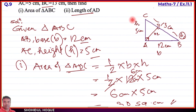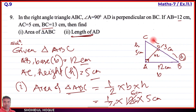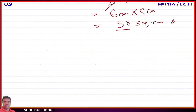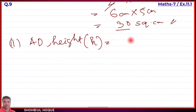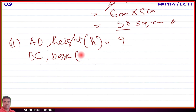For part number two, we need to find the length of AD. AD is the perpendicular from A to BC. Now, if we take BC as the base of triangle ABC, then AD becomes the height. BC is the base and AD is the height. Base BC equals 13 cm.